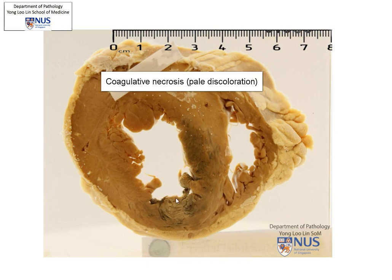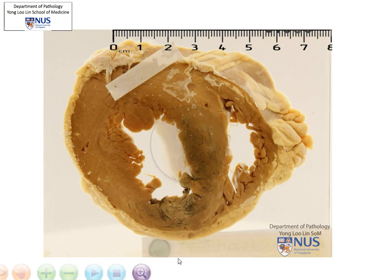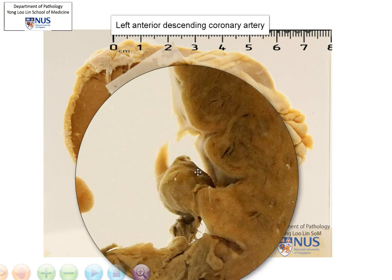What is the reason for this necrosis? The most likely reason is ischemia. Thinking about what can cause ischemia to the heart, this is actually visible in this specimen as well. We are looking in this region here — this is actually the left anterior descending coronary artery.